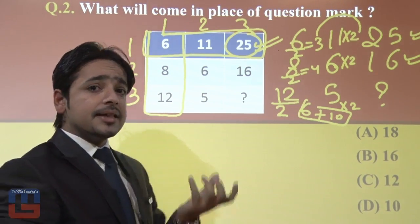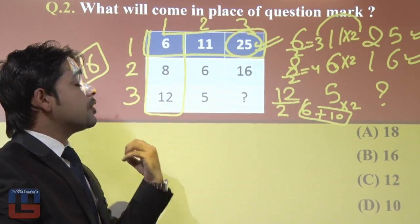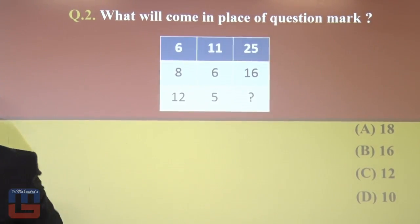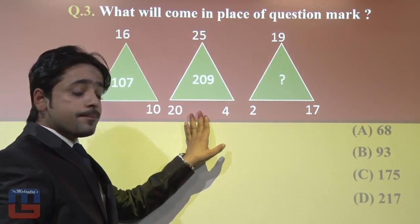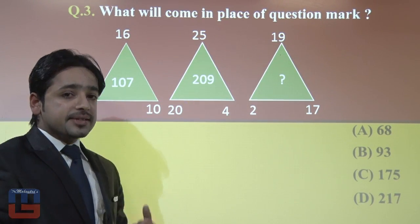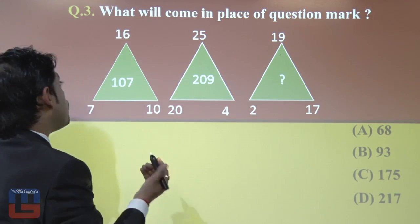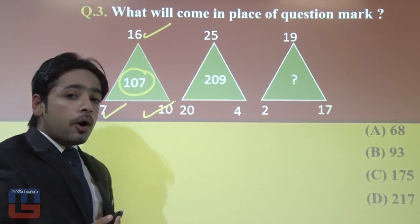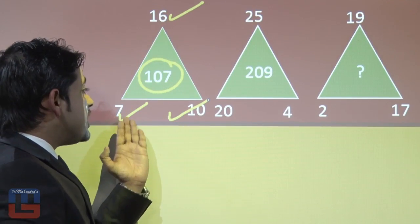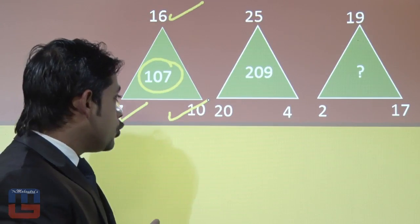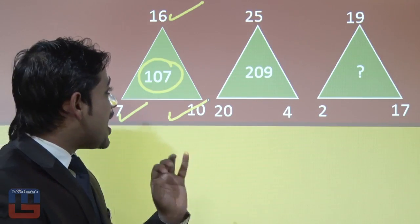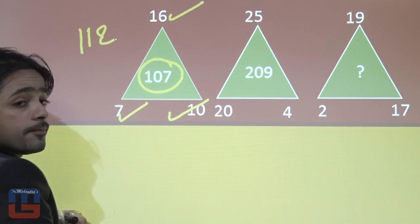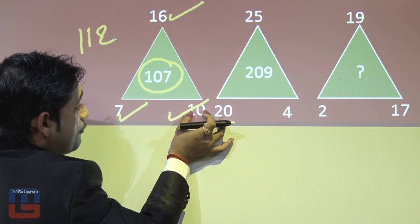Remember the trick: analyze the first row and first column, then identify the maximum number — whether it appears in the row or column. Moving to question number 3: this type of question is commonly asked in examinations. You need to make 107 using a combination of 16, 7, and 10. It could involve cubes, squares, subtraction, multiplication, or division.